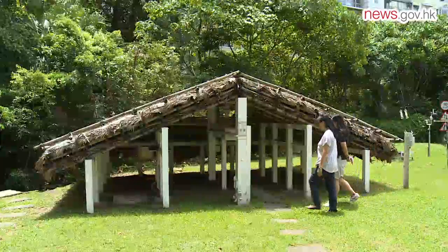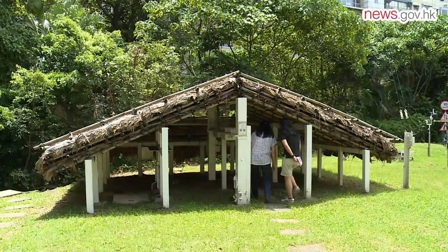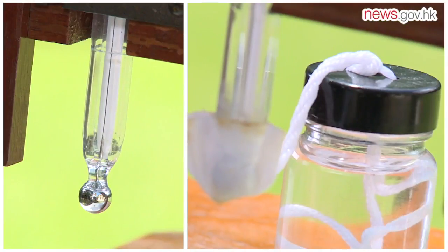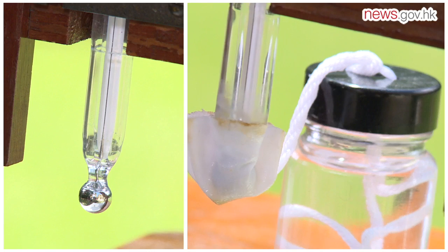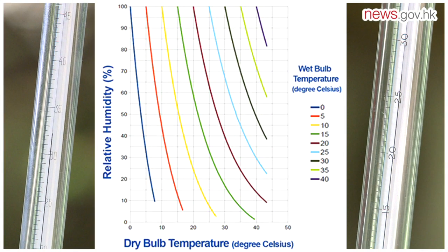You can easily measure relative humidity — the amount of moisture in the air — using two thermometers, one wrapped in wet cotton. Record the two temperature readings, and use this chart to determine the relative humidity level.